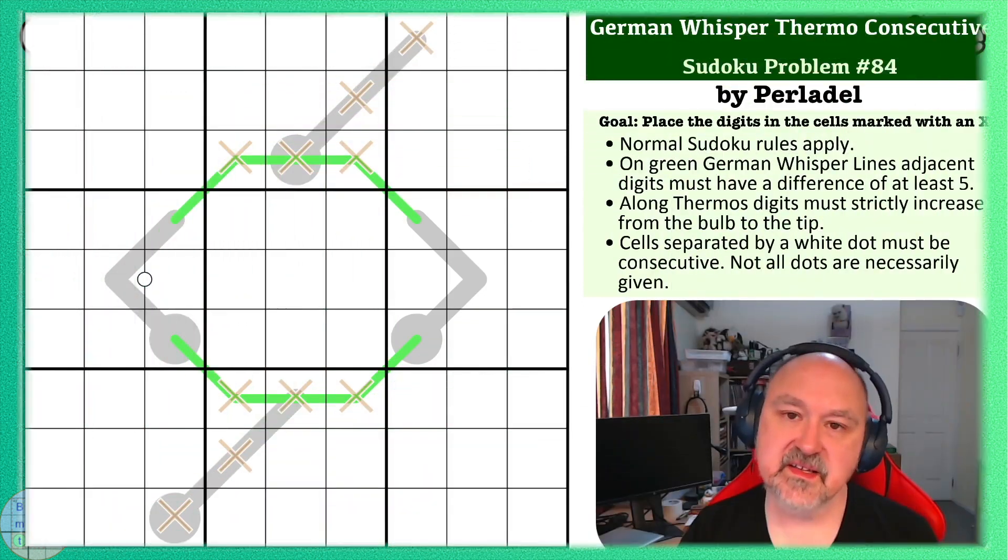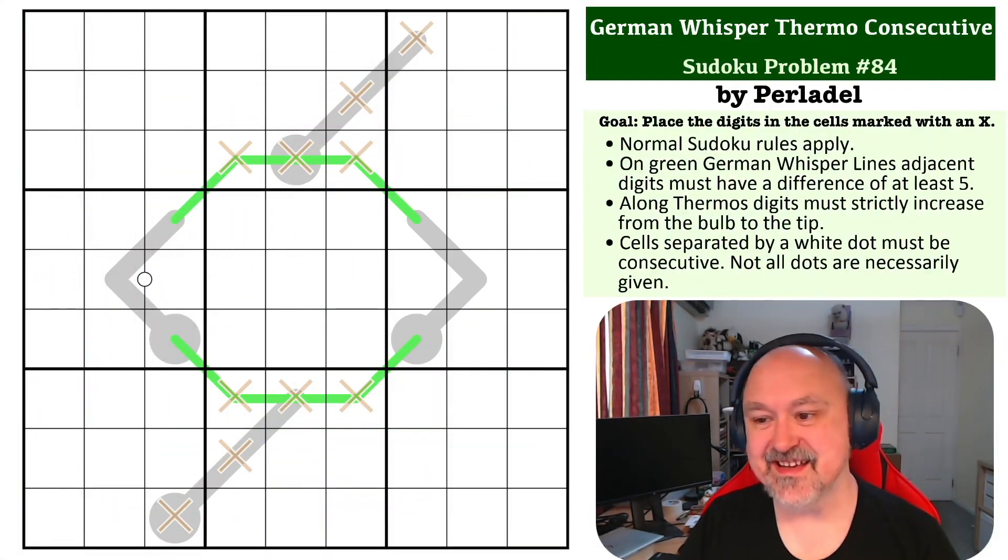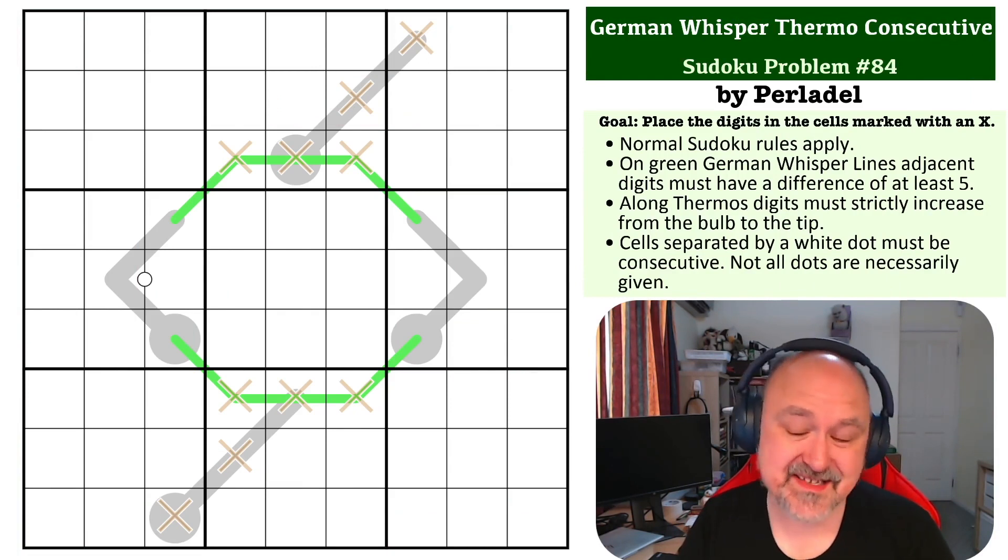Hey everyone, this is Bremster and this is number 84 in the Sudoku Problem Series. This is a German Whisper Thermo Consecutive problem which was submitted by Pilato, and this one has been rated hard by the testers.